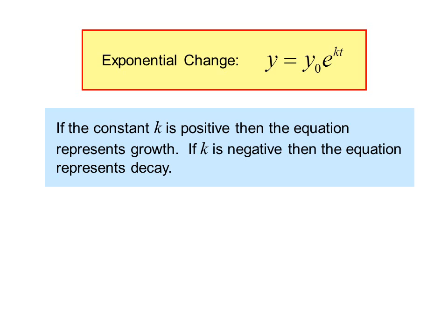Exponential change. The formula can be written as y equals y sub 0 e to the kt. If the constant k is positive, then the equation represents growth. If k is negative, then the equation represents decay.